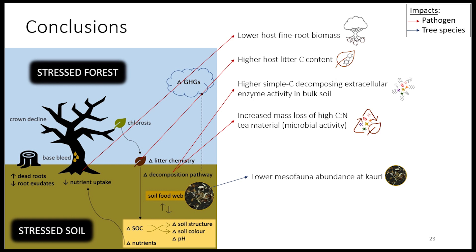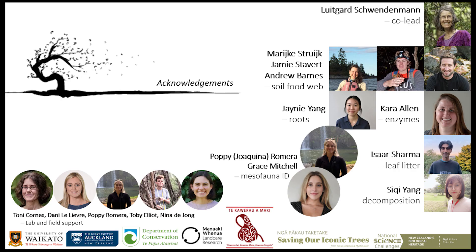In conclusion, we are slowly starting to build a more complete picture of what is happening to the ecosystem as an effect of this particular tree pathogen. At this stage, we might carefully conclude that some components and processes seem to be more linked with the actual presence of the pathogen, indicated here with red arrows, while others might depend more on which tree species are dominant in the ecosystem. Thank you for your attention, and thank you to all the people and organizations involved. I look forward to your questions, comments, and discussion.